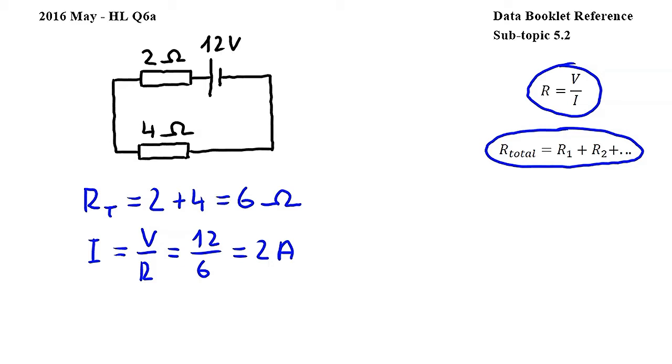Next, we will use the same equation to calculate the potential difference across the 4 ohm resistor, which is equal to R times I, so 4 times 2. This gives us 8 volts for the potential difference.